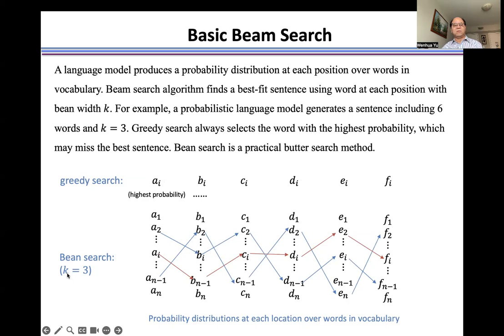For example, if the beam width k is three, that means we pick three words at each time. And then we use these three words at each time to generate a set of candidate sentences. The beam-search method finds the best fit sentence to the ground truth sentence.